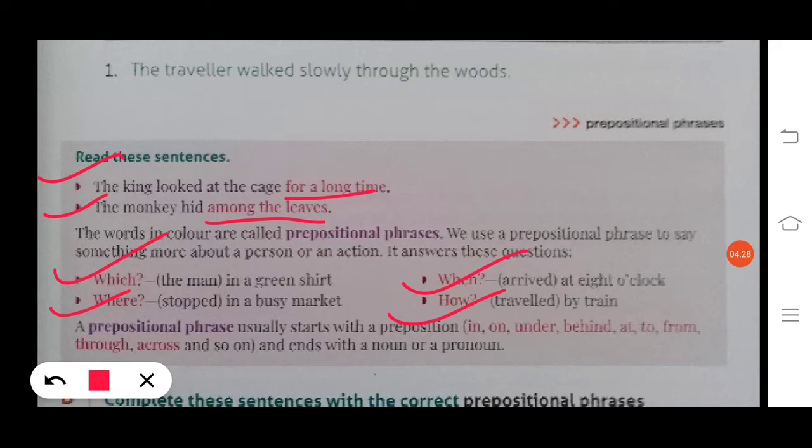A prepositional phrase usually starts with a preposition—like for and among—these two are prepositions. The prepositional phrase will start with a preposition and end with a noun or a pronoun. Examples: in, on, under, behind, at, to, from, through, across, and so on. These all are prepositions.